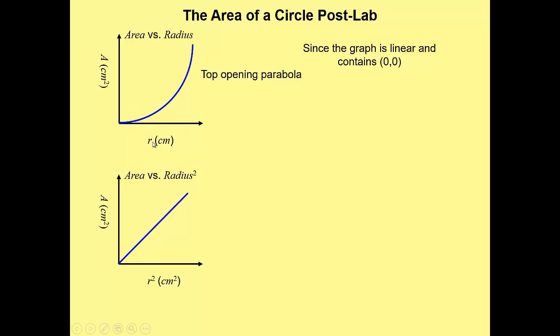Not area and radius. That didn't give us a linear graph that went through 0, 0, but rather area and radius squared. So the area here is proportional to the radius squared.